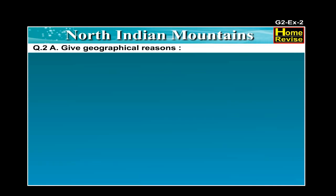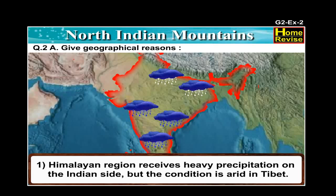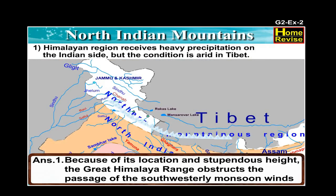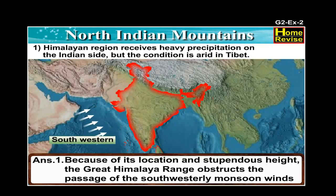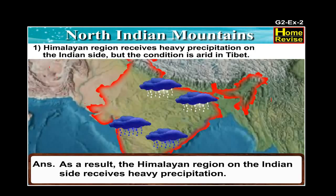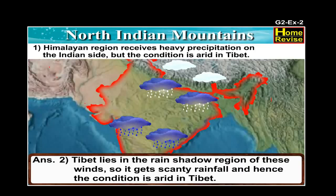Question number two A. Give geographical reasons. Number one: The Himalayan region receives heavy precipitation on the Indian side but the condition is arid in Tibet. The south-westerly monsoon winds are forced to give up most of their moisture on the Indian side. Tibet lies in the rain shadow region of these winds, so it gets scanty rainfall and hence the condition is arid in Tibet.